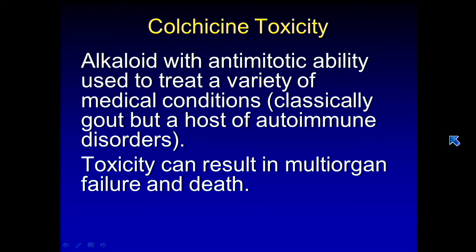Colchicine is an alkaloid with anti-mitotic ability, and it's used for a wide array of medical conditions — classically for gout, but nowadays also for familial Mediterranean fever, lupus, rheumatoid arthritis, and several other immune conditions. To me it's kind of eye-of-newt medicine, where a rheumatologist just tries colchicine to see if the patient feels better. If the patient becomes toxic, it can actually prove lethal, so you don't want to mess around if you spot these changes.